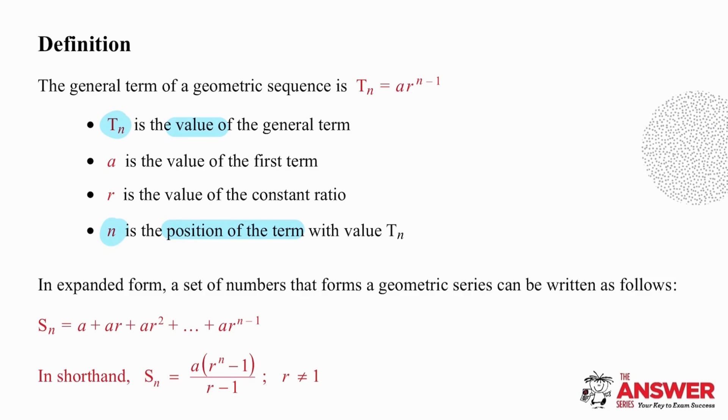If we write out the expanded form of a geometric series, we have the sum of the terms a plus ar plus ar squared. The dots indicate the missing terms in between, and the last term will be ar to the power of n minus 1.